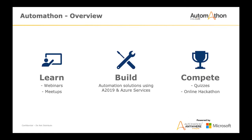In the online hackathon, you must come up with innovative ideas building automation solutions using the A2019 platform and Azure services. There are cash prizes for the top teams. We also have quizzes lined up on the platform which will be considered while shortlisting teams for the grand hack — these cover RPA and Microsoft Azure services and will help you nurture your knowledge.